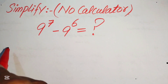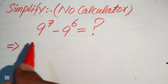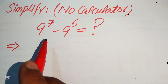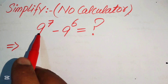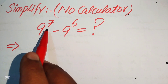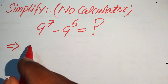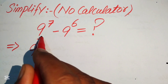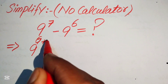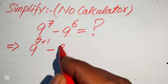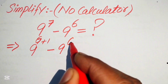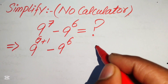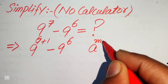The very first step is to rewrite this algebraic expression. The exponent of 9 is 7, and we write it as 9 to the power of 6 plus 1, minus 9 to the power of 6. For this we need an exponential law.